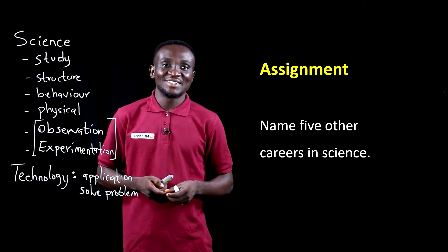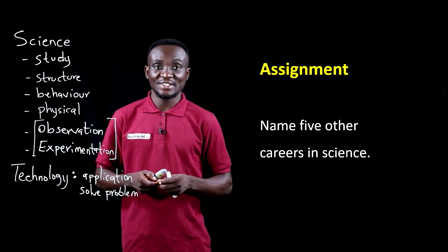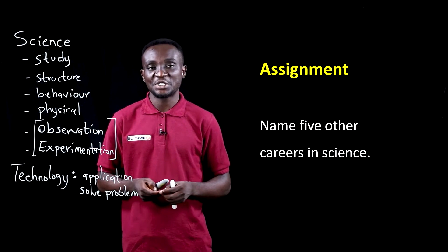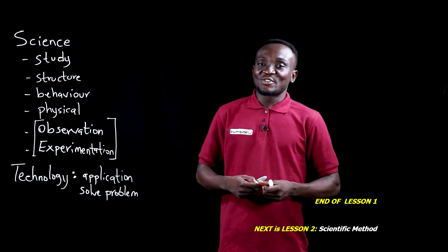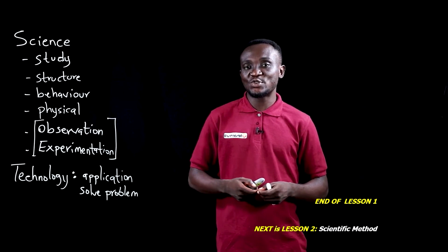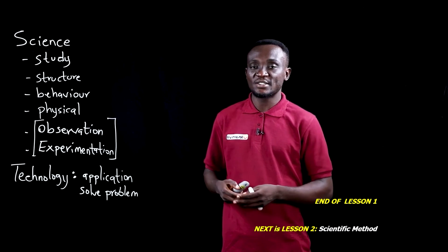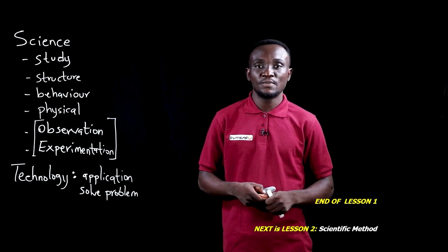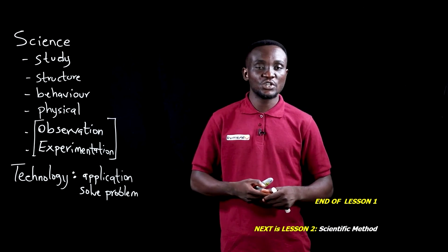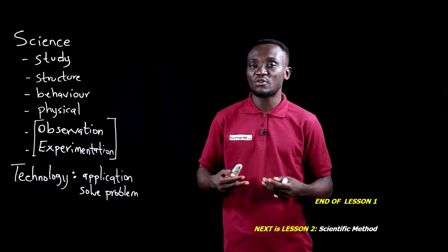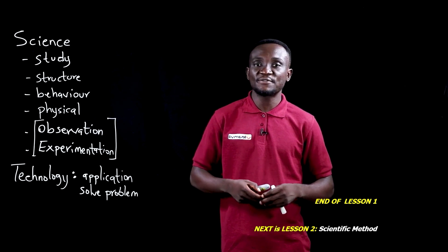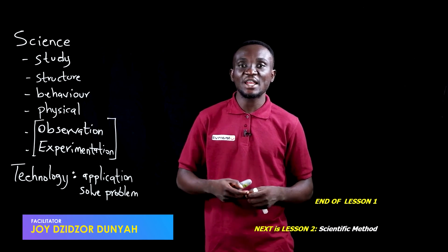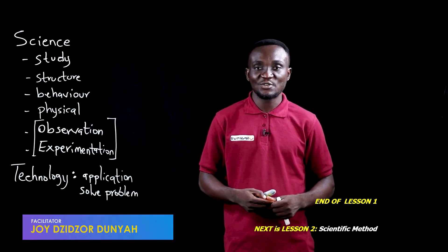Now for an assignment: after this first lesson, name five other careers in science besides what we've just mentioned. In this lesson, we looked at introduction to integrated science. We've seen the definition of science involving observations and experimentation to understand the physical and natural world, and the definition of technology as the practical application of scientific principles in solving day-to-day problems. We identified the two main branches — pure and applied science — and a number of careers in science. In our next lesson, we'll be looking at the scientific method.